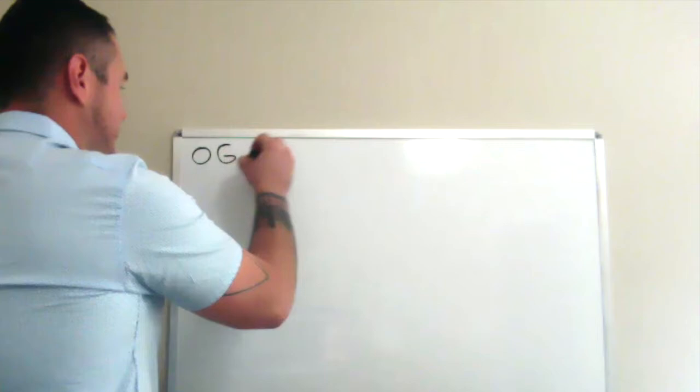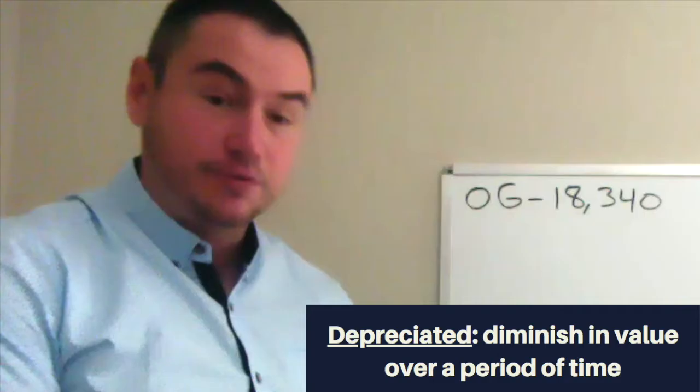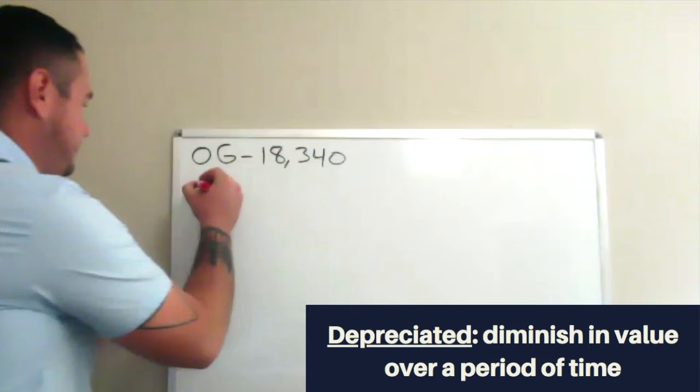All right, so this is a pretty common question. It's usually talking about original price and then discount. After discount, you're going to want to find the final price. For the original price, we have $18,340. Discount, I'm going to write in pink, just so we know that this is the amount depreciated. So depreciated amount, 15%.